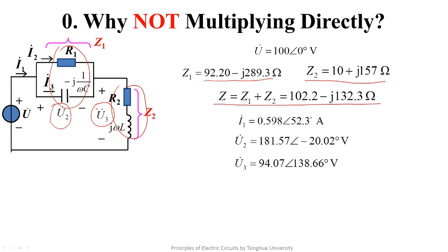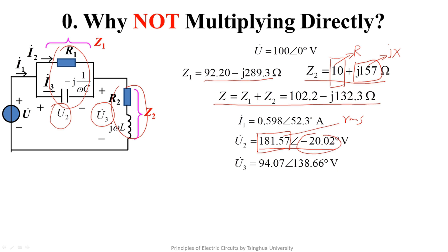Before continuing, we need to emphasize one thing. Did you notice that impedance is usually written in the form of real and imaginary parts in SSS analysis? Because the real part of the impedance has a clear physical concept — resistance — and the imaginary part also has a clear physical concept — reactance. But for branch variables such as branch current and branch voltages, we are more used to writing them in the form of modulus and phase angle. The reason is simple: the modulus shows the effective value, and the phase angle shows the initial phase angle.